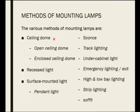There are various methods of mounting lamps — mounting meaning fixing the lights. Based on the way you fix the light, you give names for the lamps. It is called a ceiling dome, and under ceiling dome we have open and enclosed ceiling dome. Then you have recessed light and surface mounted light. Under surface mounted light, you have pendant light, sconce, track lighting, under cabinet light, emergency or exit lighting, high and low bay lighting, strip lighting, and soffit.